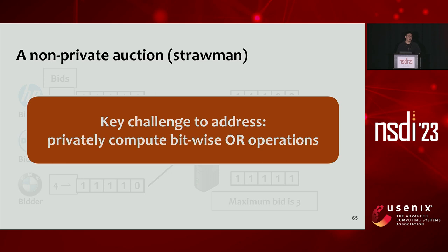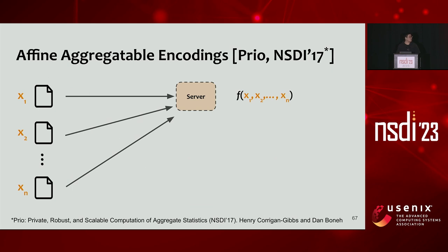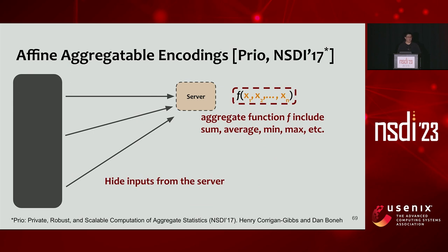The key challenge is how to privately compute bitwise OR operations efficiently. We introduce our building block called Fine Aggregatable Encodings, or AFE scheme. In AFE, there are N clients each holding an input x1 to xN, and a server wants to compute statistical results over these inputs. The aggregate function F can include sum, average, mean, and max, while the clients' inputs remain hidden from the server.